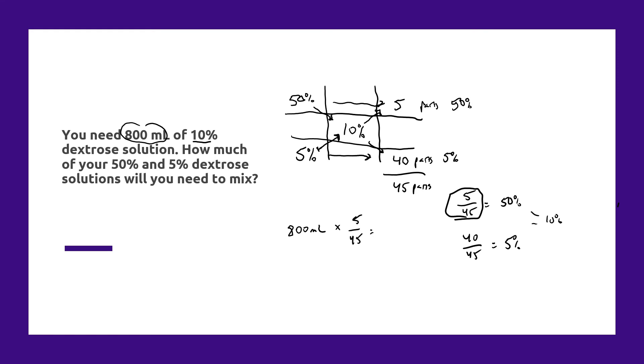And the order of operation for this equation simply is 800 times 5 divided by 45. And that's going to be 88.888, and so on. We'll just round that up to 88.9, or we could round that up to 89.